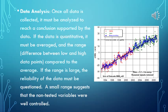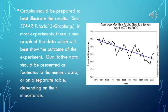Once all data is collected, it must be analyzed to reach a conclusion supported by the data. Quantitative data must be averaged and the range — the difference between low and high data points — compared to the average. A large range means the reliability of the data must be questioned, while a small range suggests that non-tested variables were well controlled. Graphs should be prepared to best illustrate the results, and in most experiments there is one graph that will best show the outcome. Qualitative data should be presented as footnotes to the numeric data or on a separate table depending on importance.